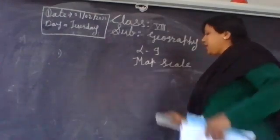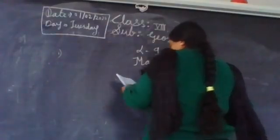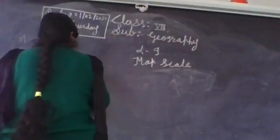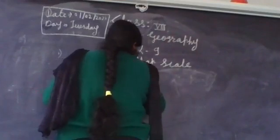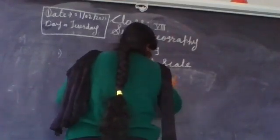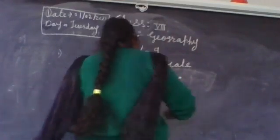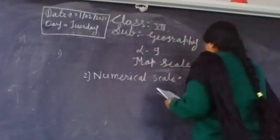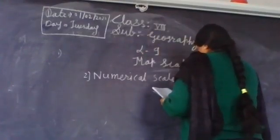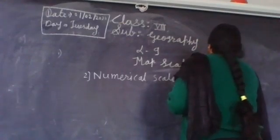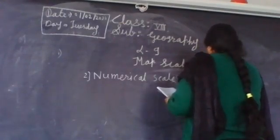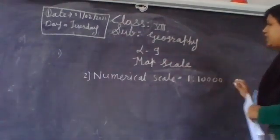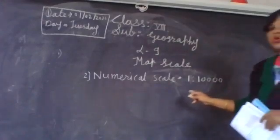The second scale we are going to describe is the numerical scale. The name itself indicates the meaning. For example, one is to 10,000. Here, no words have been used. Only the ratio has been shown.